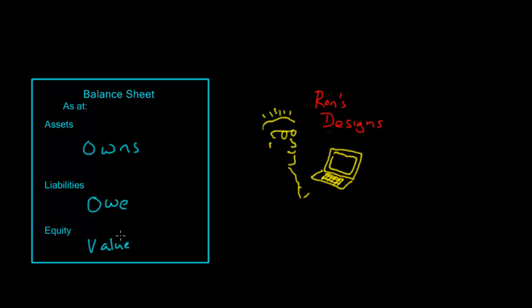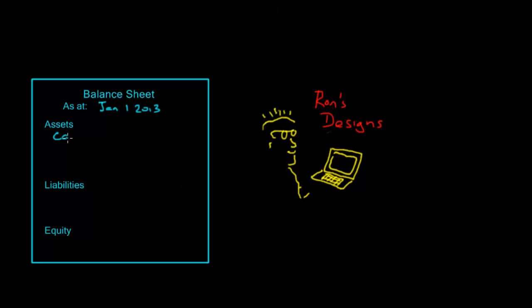So let's take a look at what Ron's balance sheet would look like at the start of the period — when Ron first got started with the business, as at January 1st, 2013. Ron put in a total of $1,000 cash when he set up the business, and his mother also lent him $500, which she would expect the company to pay her back. So in terms of assets, there's cash sitting in the bank — $1,000 plus the $500 — so $1,500.